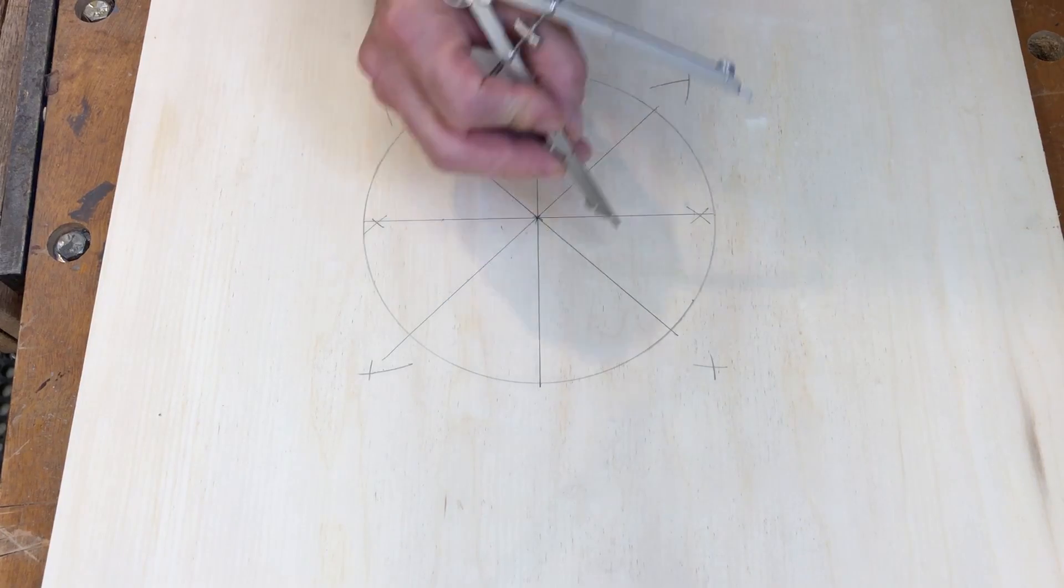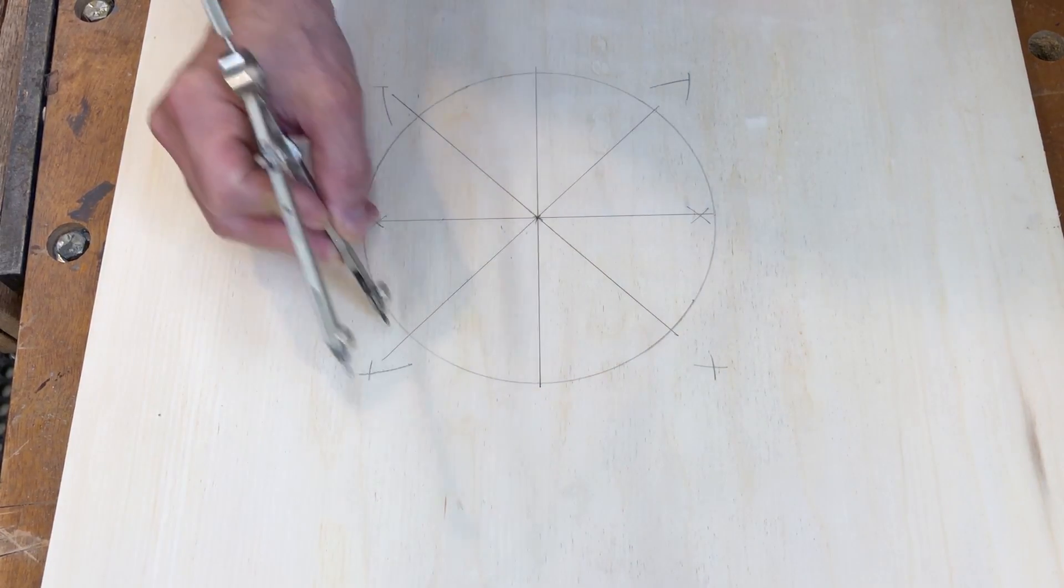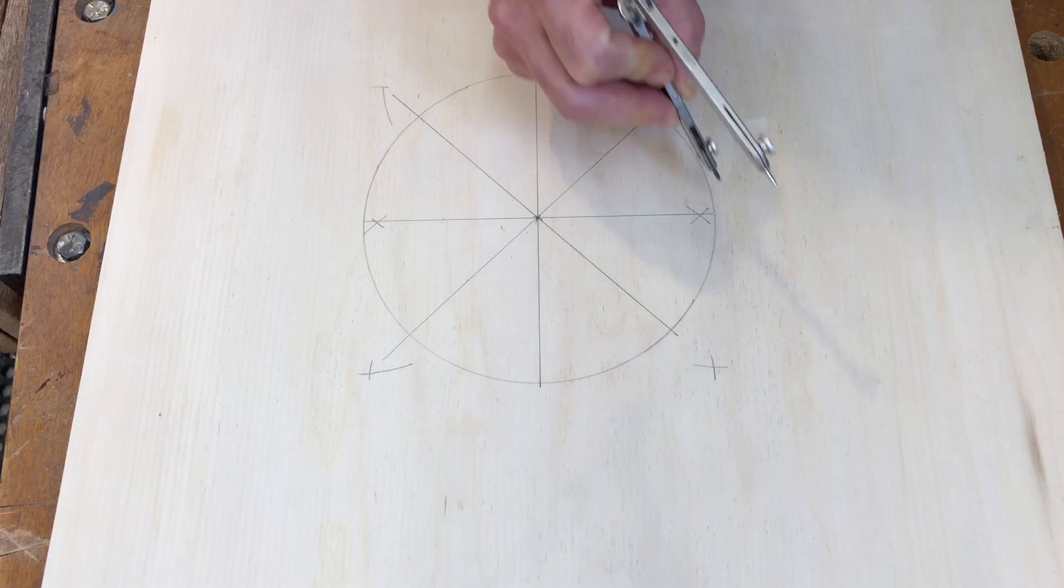Now if you want to avoid drawing lines all the way across, if you just need to mark the circumference of your circle, of course you can go ahead and do that instead of drawing the lines all the way across and needing to erase those.